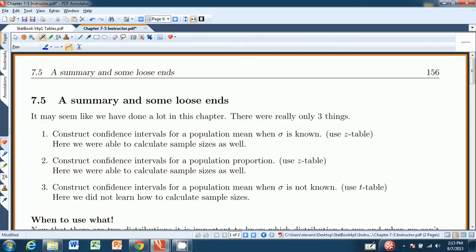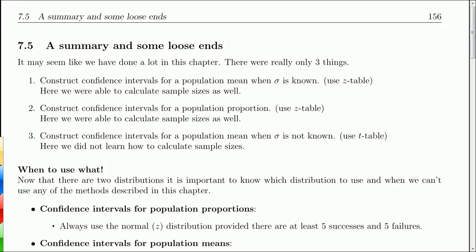Hi there and welcome to chapter 7.5 from Stevens' Introduction to Statistics, The Think and Do Book. This section is just a little summary and tying up a couple of loose ends from chapter 7.